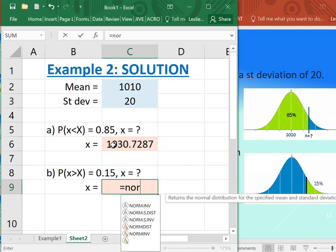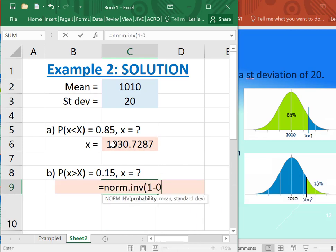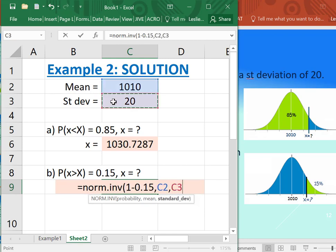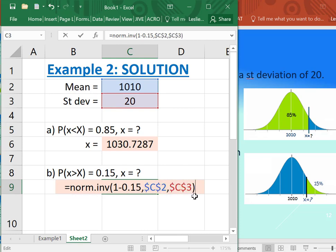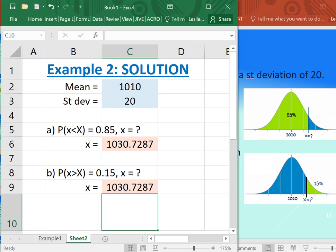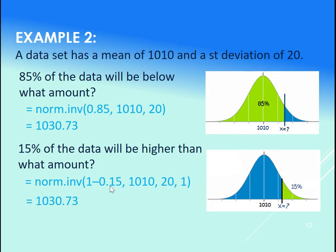And if we want the x value, such that the area to the right is 0.15, we could realize it's just the same x value. Or we do NORM.INV 1 minus the 0.15 comma the 1010 comma the 20. Again, you can lock those if you want. We're not copying them down anywhere. So they both give 1030.73.